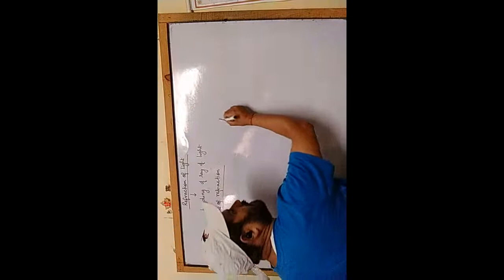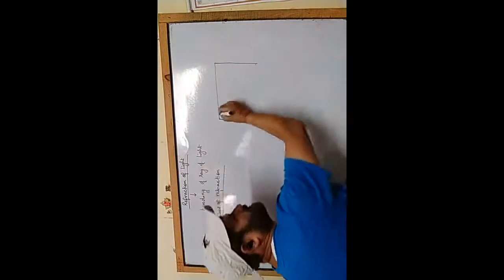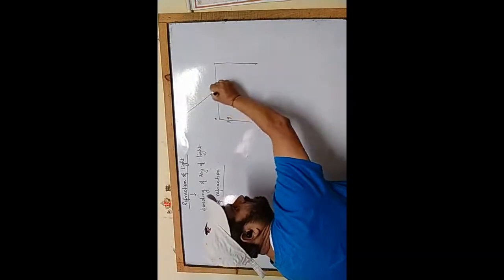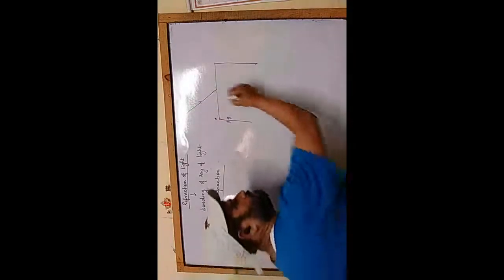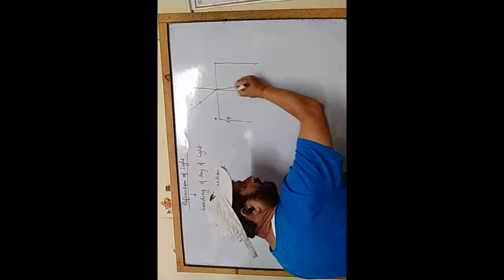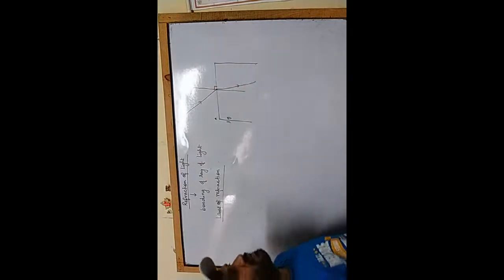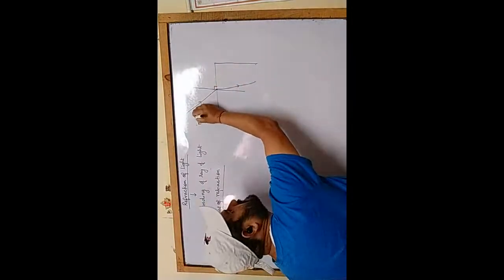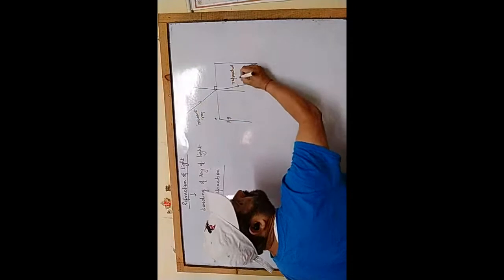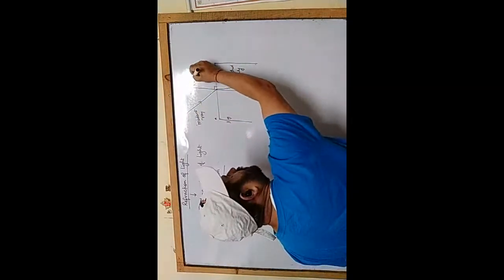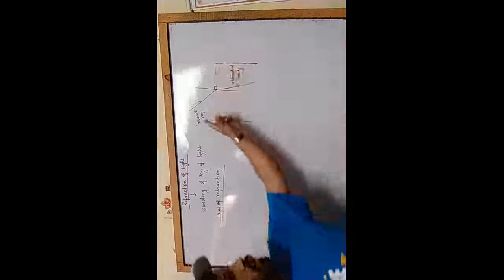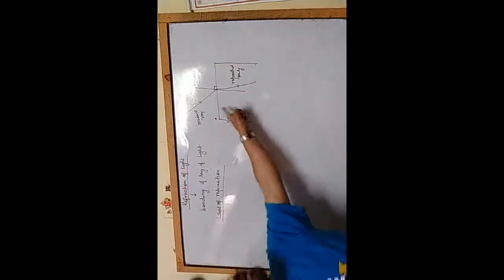Let's talk about a glass slab. Let's say this part is glass and this part is air. We put a ray of light entering from air to glass — it bends. To understand this, we draw a normal at 90 degrees at the point of incidence. This line is termed your incident ray, this part is your refracted ray, and this is your normal. The incident ray, the refracted ray, and the normal all lie on the same plane.